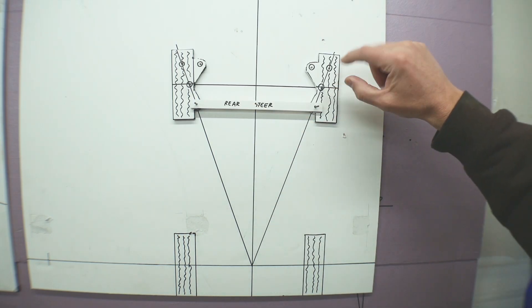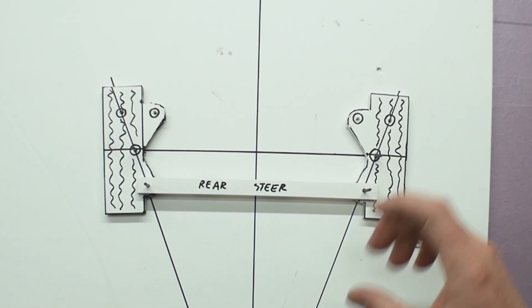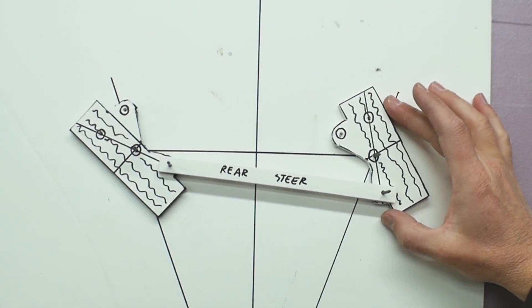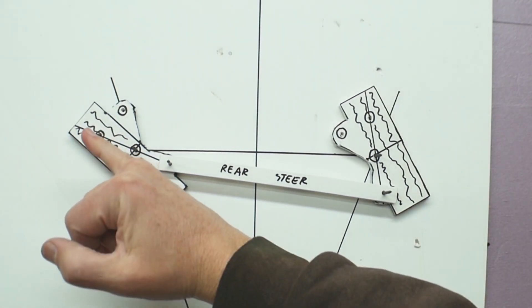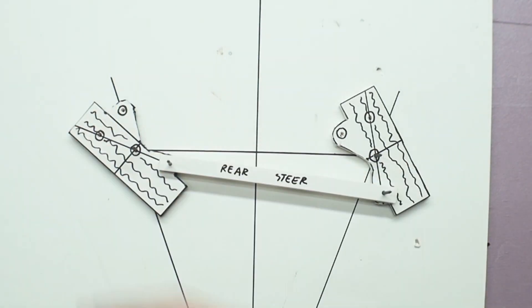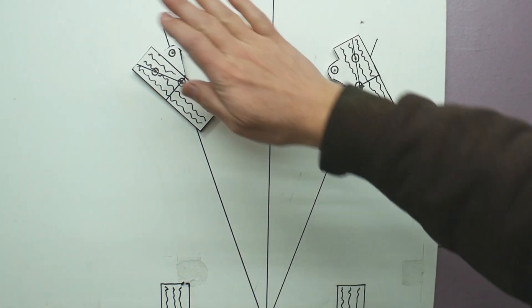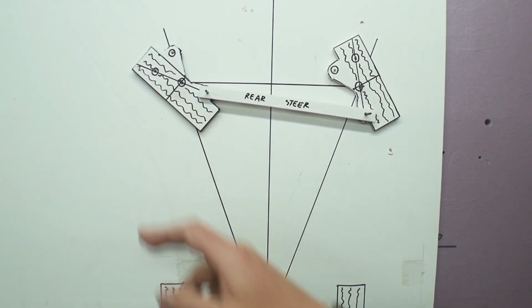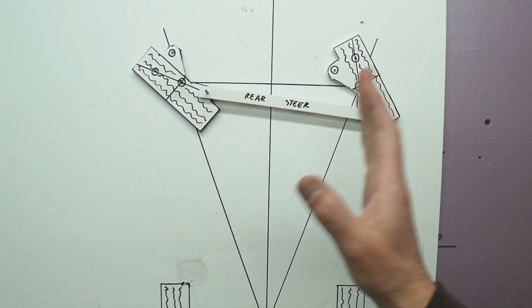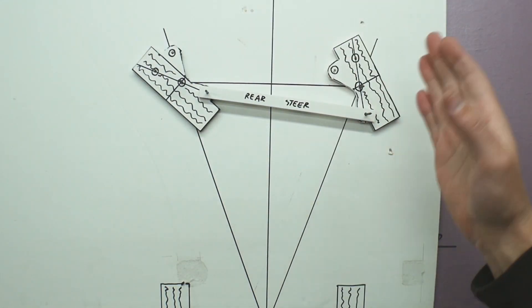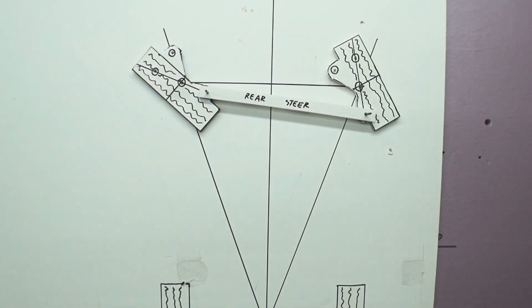So Ackerman is geometry involved that allows it so when the tires turn, if you can see here, the inside tire is actually turning at more of an angle than the outside tire. So now as you go around that turn, the inside, technically if this is set up perfectly, they're both riding on the proper arc and there's no scrubbing whatsoever.